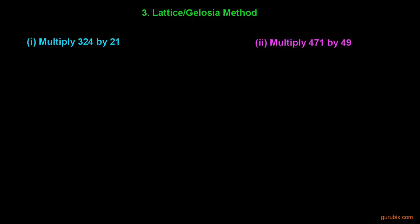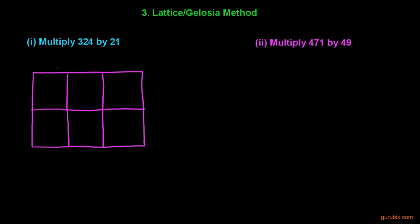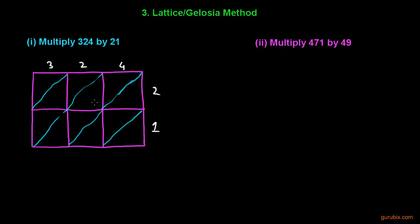Let us move to the third method: the lattice method, also called the gelosia method. This method is also called the diagonal method. We shall use the same examples. In example 1, we have to multiply 324 by 21. We draw a grid, write 324 along the top and 21 on the side, and draw the diagonals.